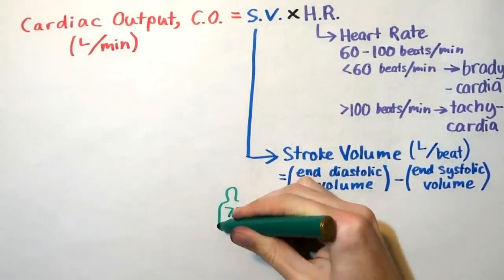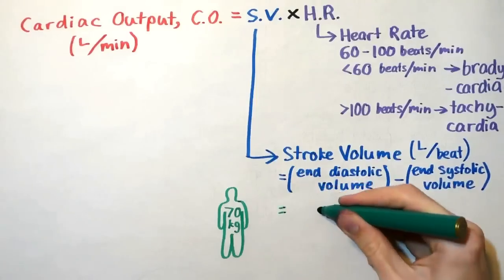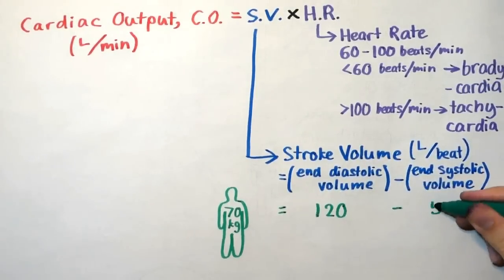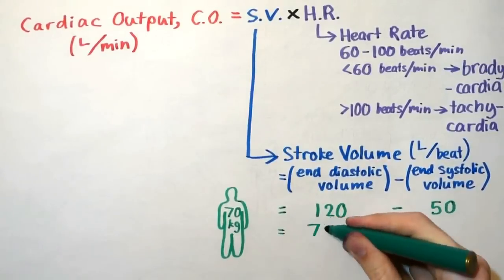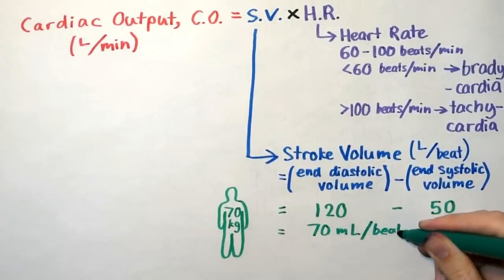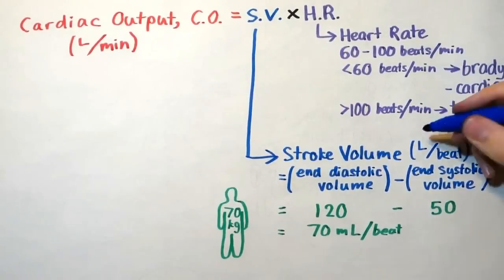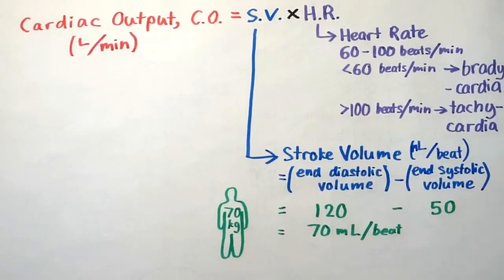In a 70 kg male, the end-diastolic volume is approximately 120 mL, and the end-systolic volume is approximately 50 mL, giving a stroke volume of 70 mL per beat. The stroke volume can be affected by several factors, such as the size of the heart, duration of contraction, contractility, and the amount of aerobic exercise that is performed on a regular basis.